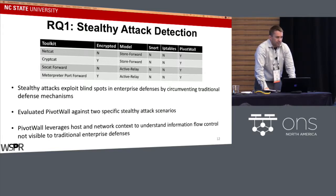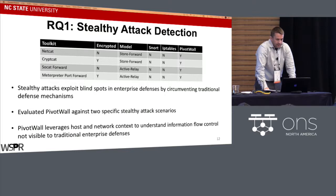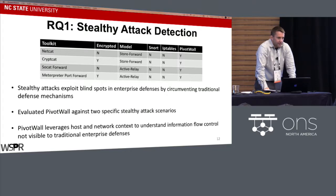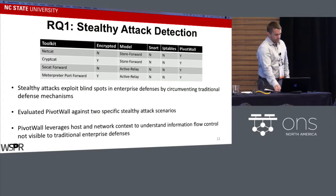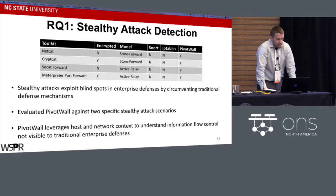We applied both network intrusion detection and host-based intrusion detection using the most conservative rules possible to prevent the flow of information from a host through an intermediate stepping stone out of the network. We found that traditional enterprise defenses lack the full context of what's occurring inside the host or on the network to form a holistic picture of the attack. PivotWall succeeds in this class of attacks because it understands the full context of information flow controls as they occur.